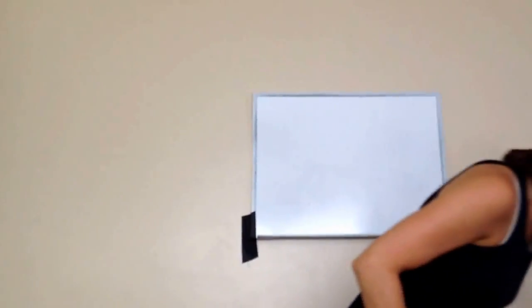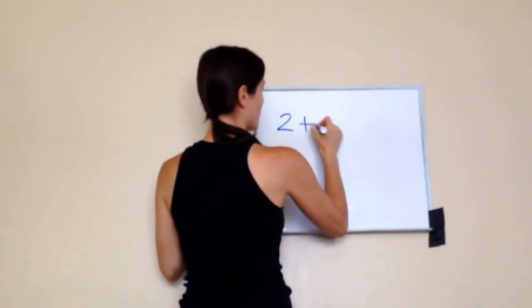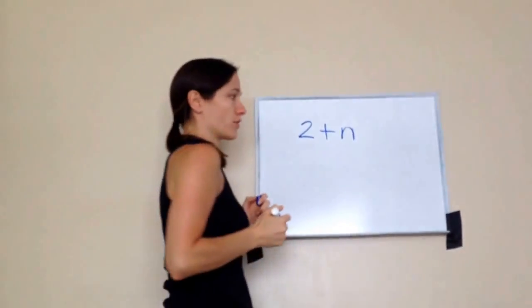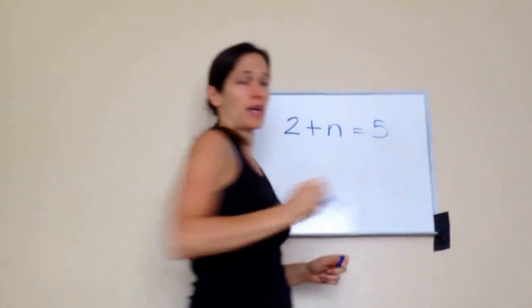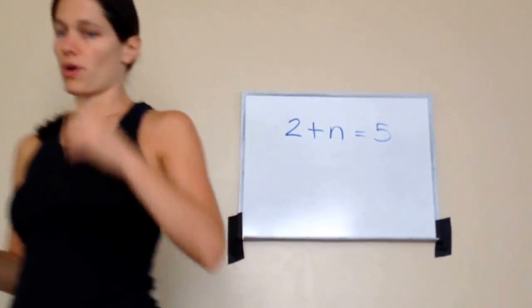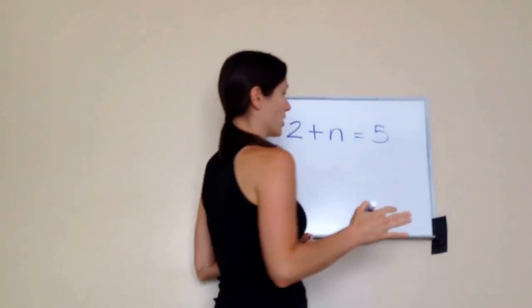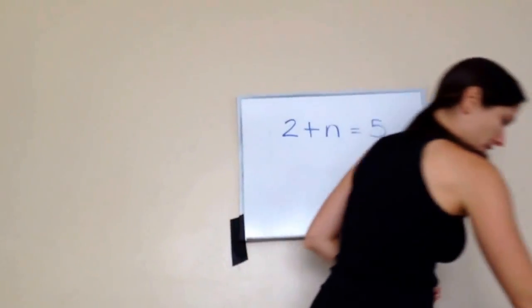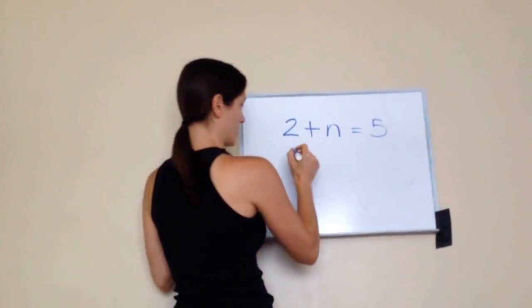For example, something that looks like this: 2 plus N equals 5. These are some of the problems we're going to be working with today. There's an easy way to figure this out — there are actually three different ways that you'll see a problem like this.